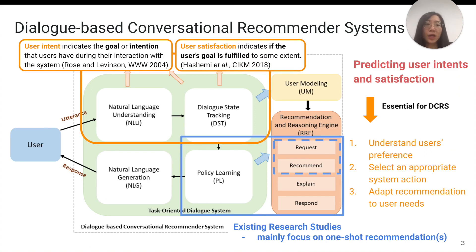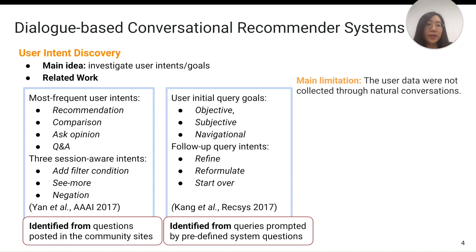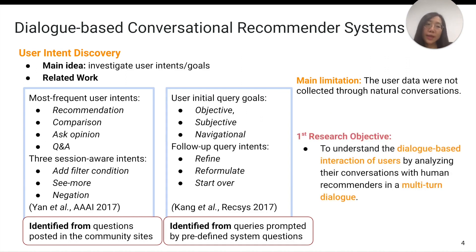Therefore, in our work, we study these critical problems. To do user intent prediction, it is important to understand how users interact with recommenders. Currently, only a few studies identify several user intents in recommendation dialogues. For example, one research work identified frequent user intents like recommendation and comparison from questions posted in community sites. Another research work classified users' initial queries into objective, subjective, and navigational goals, then identified three intents for follow-up queries. But those collected queries were prompted by predefined system questions, meaning the user data were not collected through natural conversations. Therefore, for our first objective, we aim to analyze multi-turn human conversation to understand the dialogue-based interaction between users and recommenders.